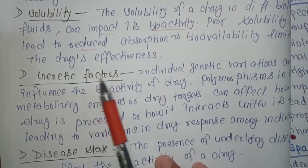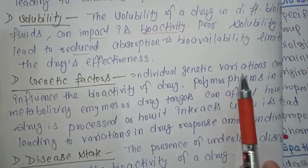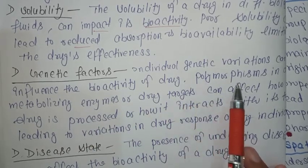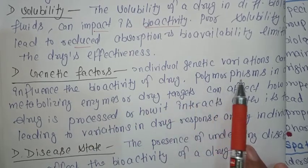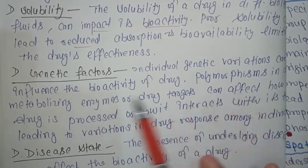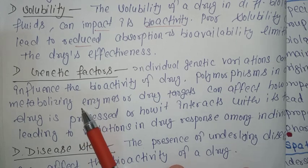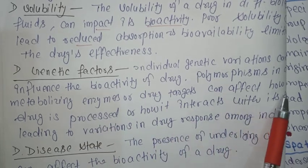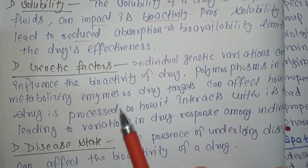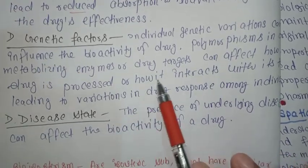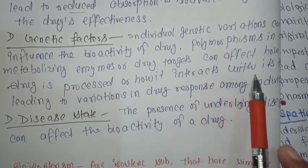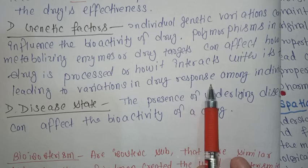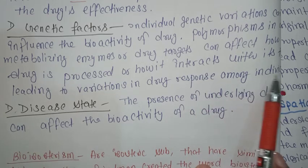The next factor is genetic factors. Individual genetic variations can influence the bio-activity of a drug. Polymorphisms in drug-metabolizing enzymes or drug targets can affect how a drug is processed or how it interacts with its target, leading to variation in drug response among individuals.